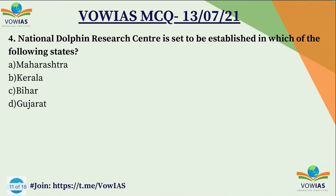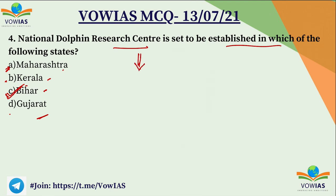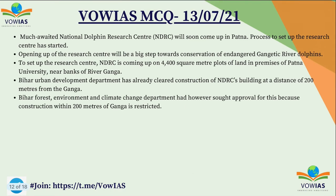The fourth question: 'The National Dolphin Research Center is said to be established in which state? A) Maharashtra, B) Kerala, C) Bihar, D) Gujarat.' The correct answer is C, Bihar. The National Dolphin Research Center is going to be set up in Patna, Bihar, mainly for the conservation of the Gangetic dolphin.